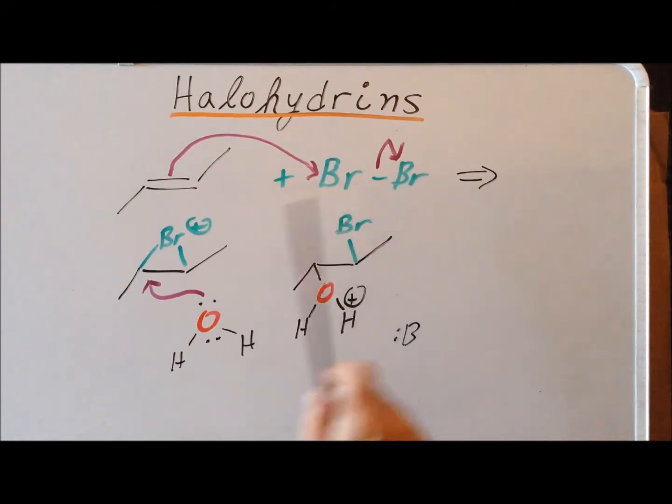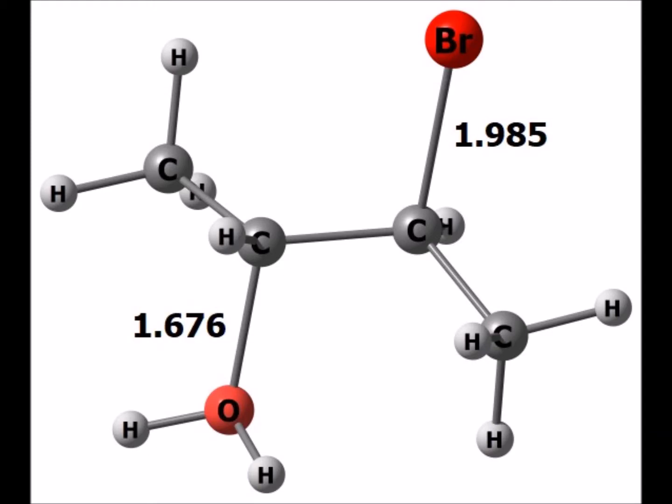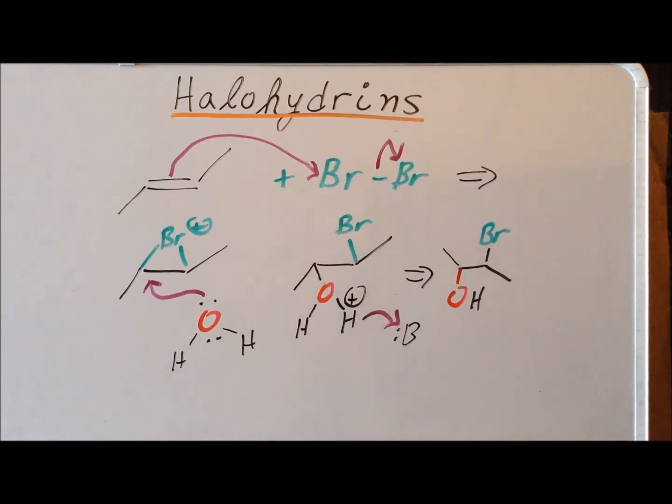And the last step to achieve electrical neutrality is for the base, the solvent water, to abstract the proton from the protonated alcohol. And we are left with our halohydrin product, 3-bromo-2-butanol. And we recognize that it's a halohydrin because we have the haloalkane functionality and the alcohol functionality on adjacent carbon atoms.